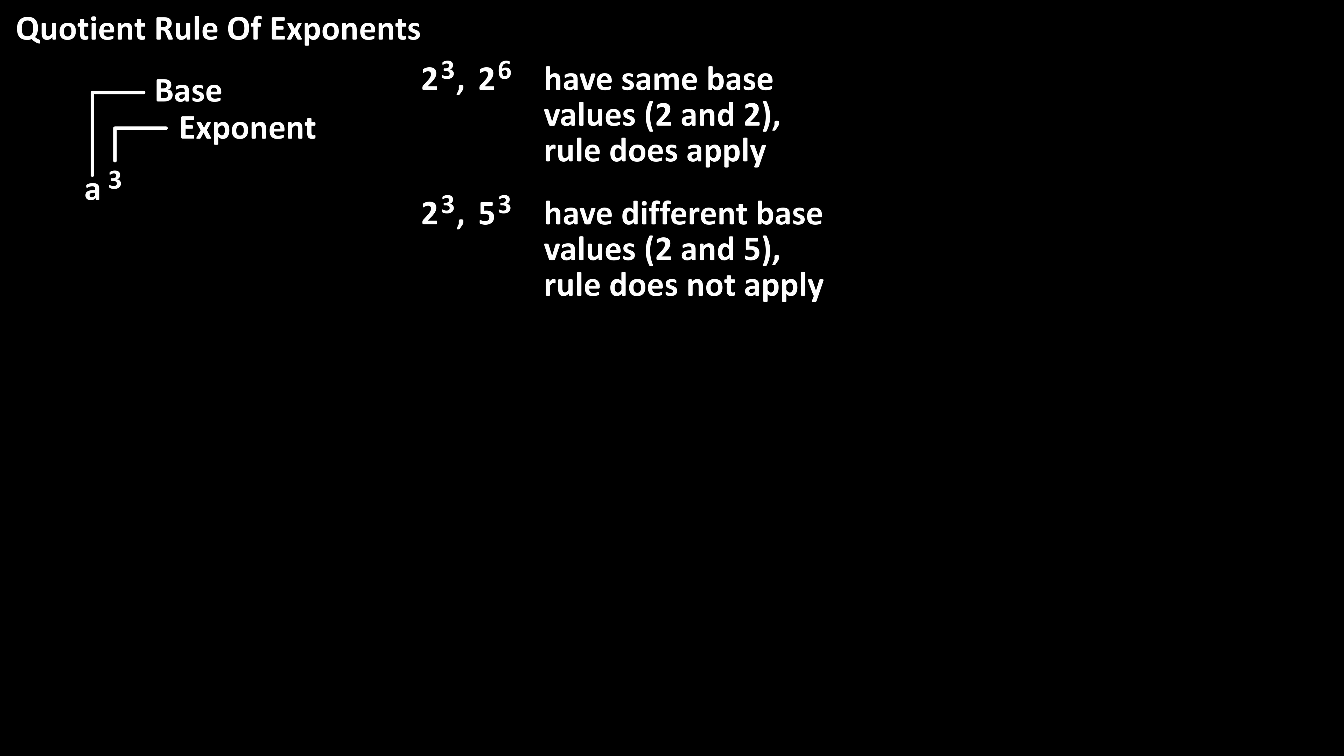The quotient rule for exponents only applies to exponents that have the same base value. It is a raised to the m divided by a raised to the n equals a raised to the m minus n. So for division, we subtract the exponents.